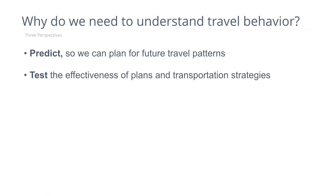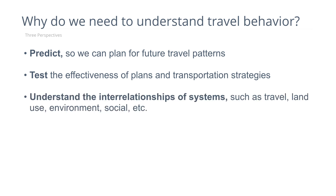Second, we want to test plans, such as a regional transportation plan, or improvements such as a proposal for a light rail line. And third, we need to understand the interrelationships of systems, such as how travel interacts with land use systems, environmental systems, and social systems.